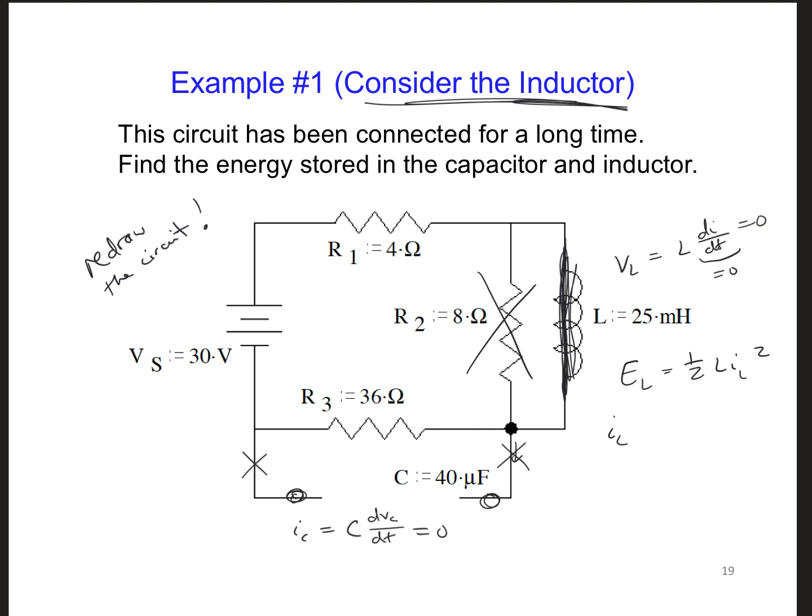So if I were to redraw this circuit with all that in mind, I could have R1 and just R3, just these two resistors in the circuit. So the current would just be Vs over R equivalent, which is R1 plus R3.